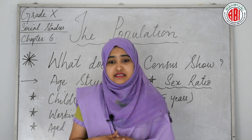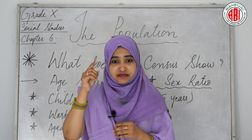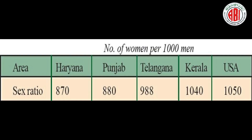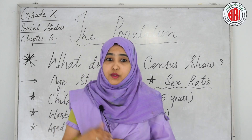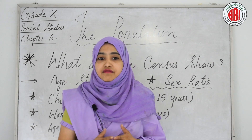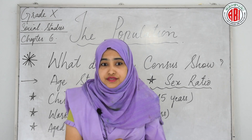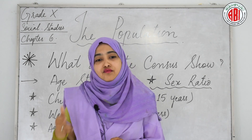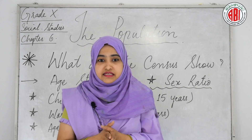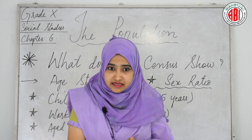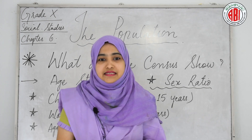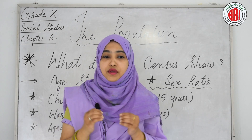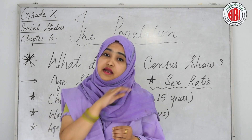Societies or regions that provide equality to women show different sex ratios. Regions with unequal gender relations that favor males and discriminate against females tend toward unequal sex ratios, even if they have high incomes. Looking at the chart, notice the number of women per 1000 men in Haryana, Punjab, Telangana, Kerala, and the USA. Within India, certain parts like Kerala have a positive sex ratio, while some other regions are extremely biased against women.